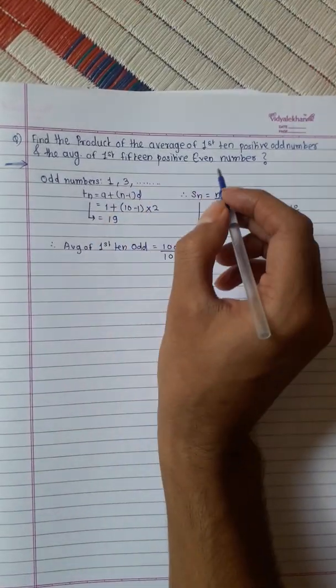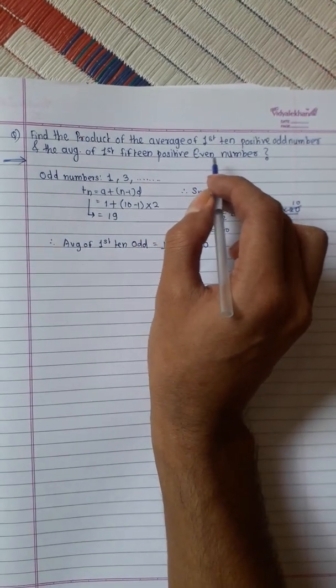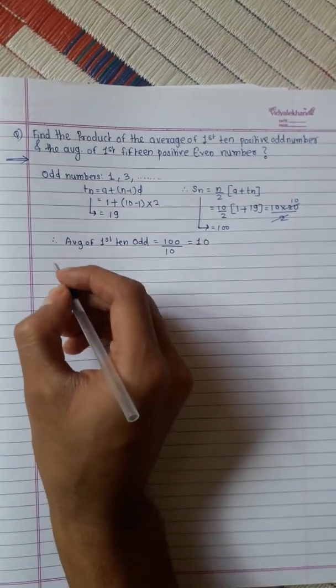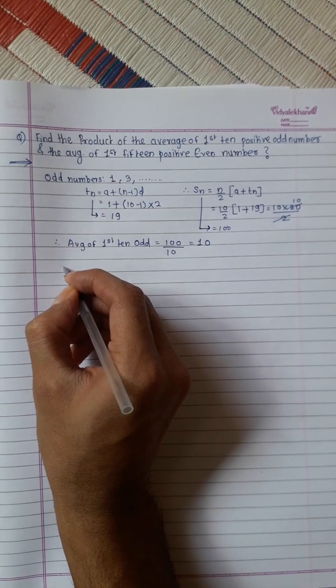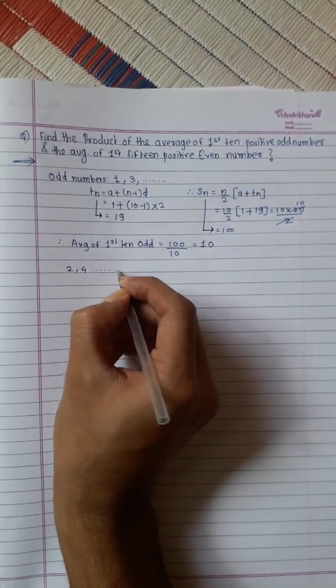Now, we will calculate the first even numbers average. Now, even numbers start from 2, 4, like this.